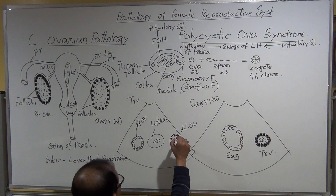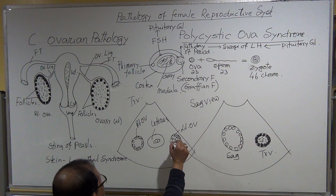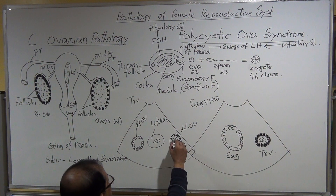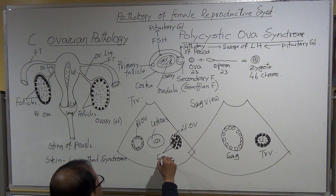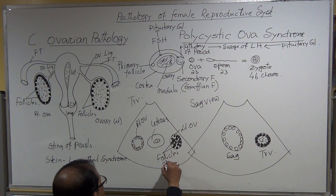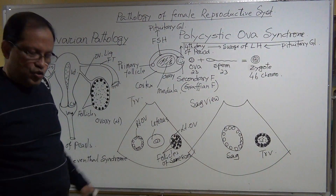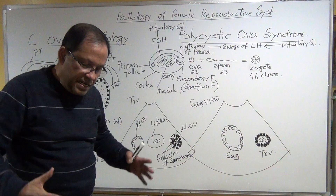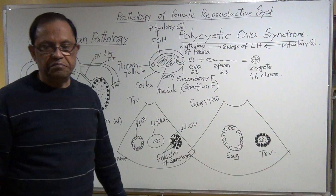The follicles are so many they can also occupy the medullary part. You will be surprised — the whole ovary is taken by follicles, but none of them are Graafian follicles; they are all of the same size. This is easy to diagnose sonographically as an enlarged polycystic ovary, but you have to correlate with the patient's history and blood report for the diagnosis to be complete.